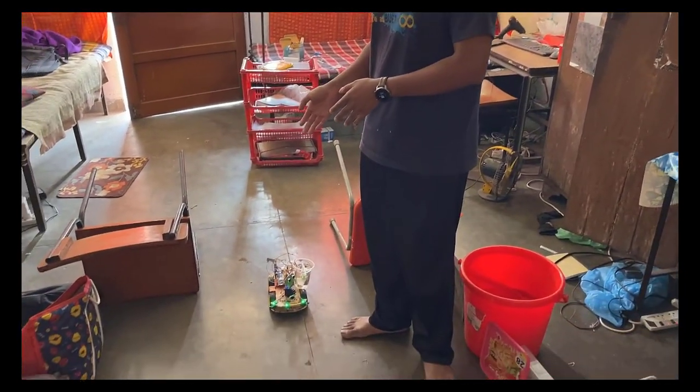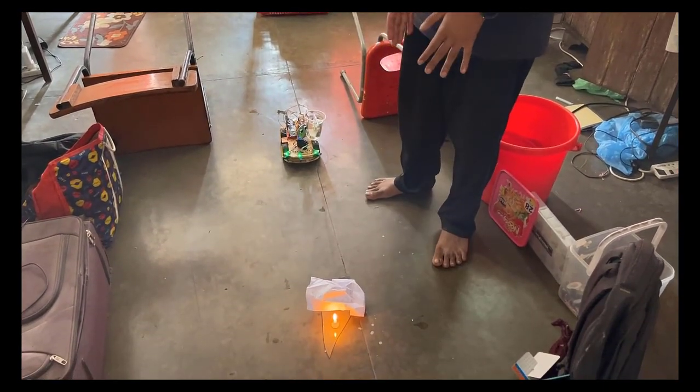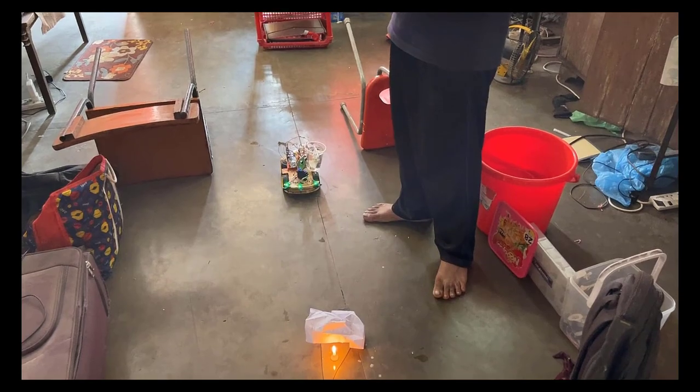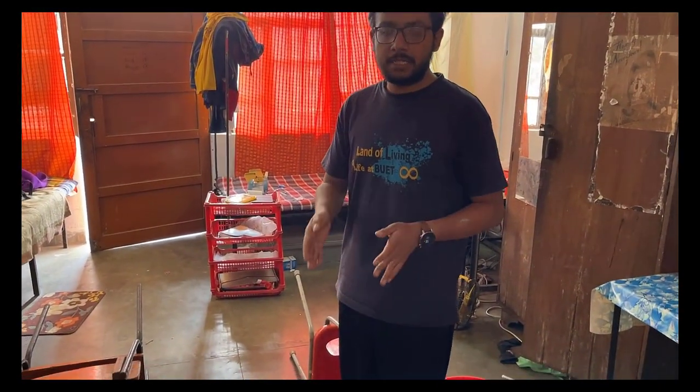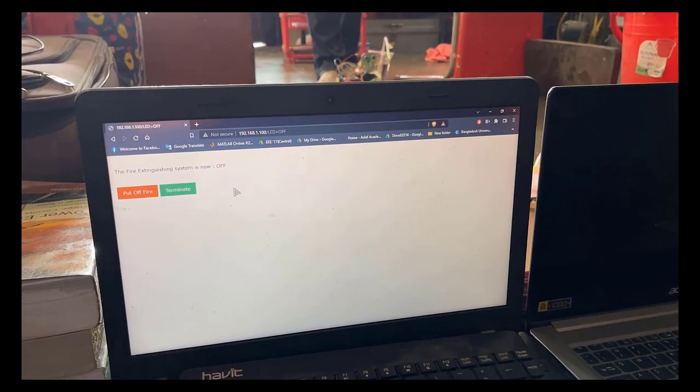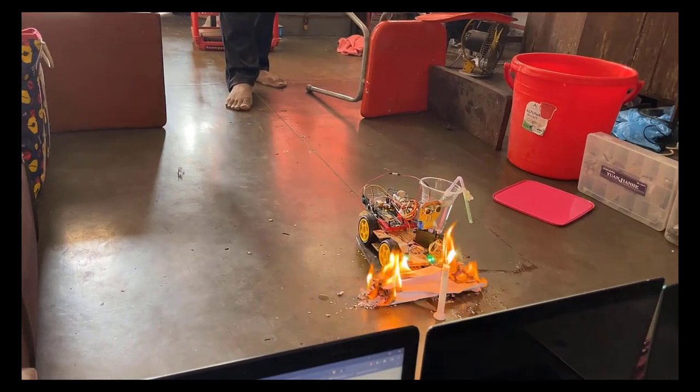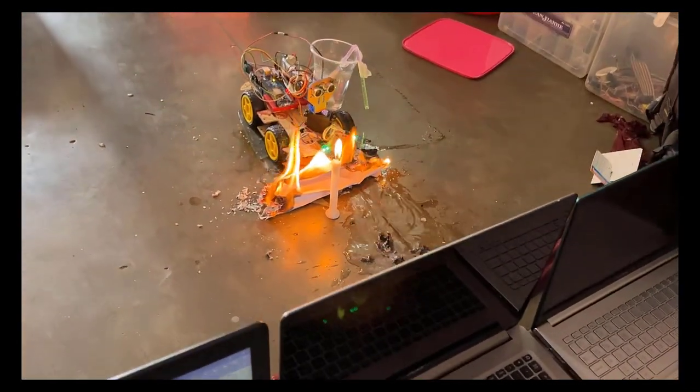The third feature of our car is extinguishing the fire. So, we have put fire in front of our car. And now, we will actuate the car and see if the car can really extinguish the fire. Now, we are actuating our fire bot. It is spraying water.